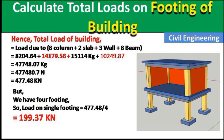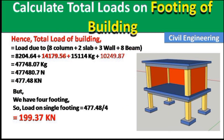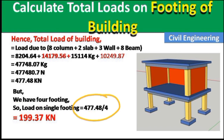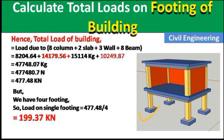We have 4 footings in this building. This total load is distributed across all four footings. Load on a single footing = 477.48 ÷ 4 = 119.37 kN. If there were 6 footings, we would divide by 6 instead.